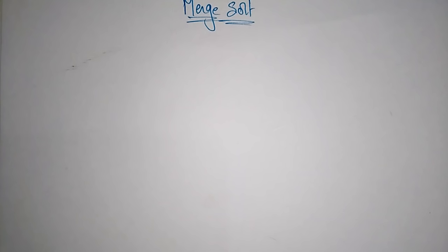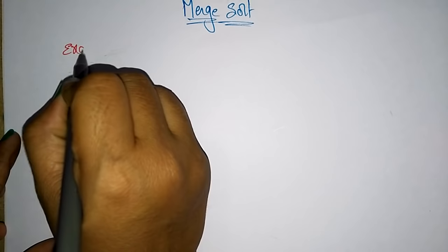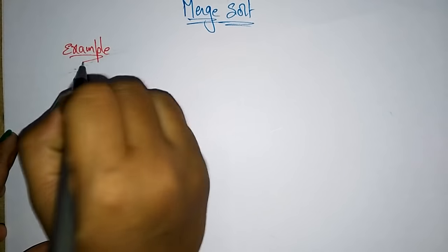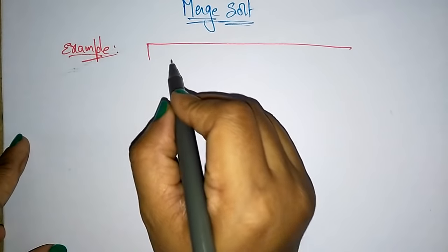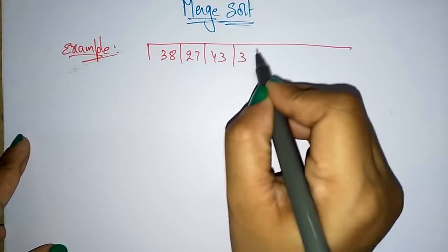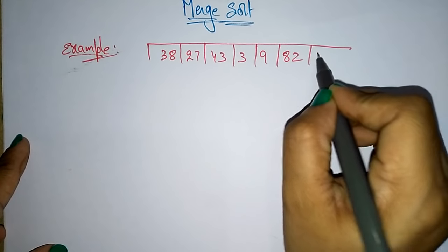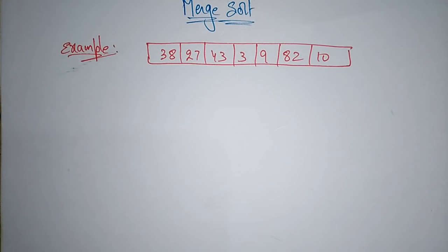Hello students. In the previous video I explained about what is a merge sort and the algorithm of merge sort. Now let us see an example for merge sort. Let me take one array: 38, 27, 43, 3, 9, 82, and 10. This is an unsorted array that we have to sort.